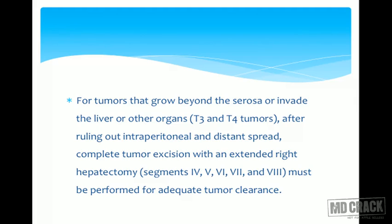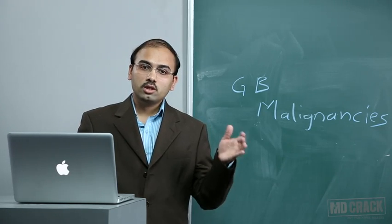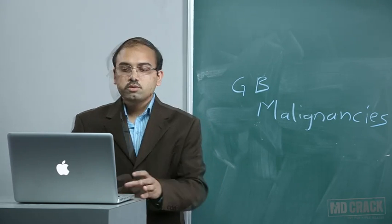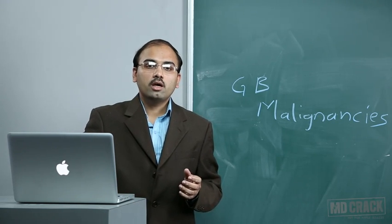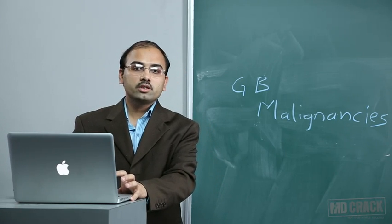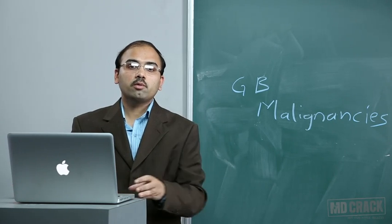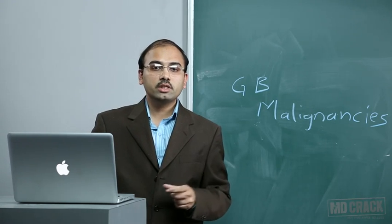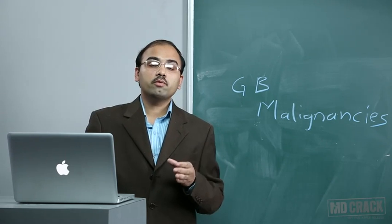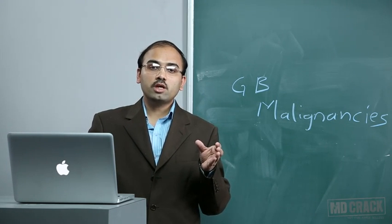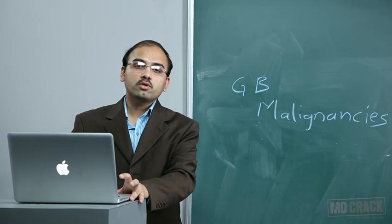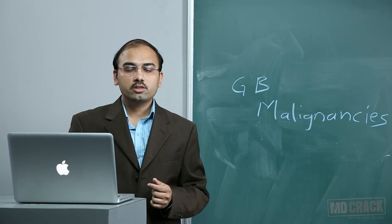For T3 and T4 lesions — tumors growing beyond the serosa or invading the liver or other organs — complete tumor excision with extended right hepatectomy (removal of segments 4, 5, 6, 7, and 8) is required for adequate tumor clearance. This can only be done after ruling out distant liver metastasis or intraperitoneal visceral organ metastasis.